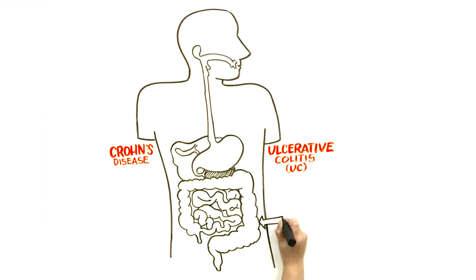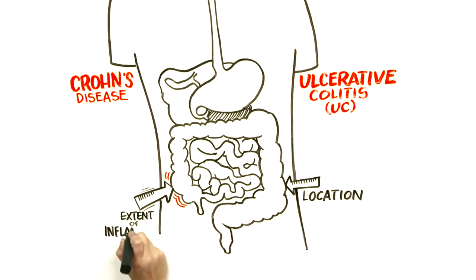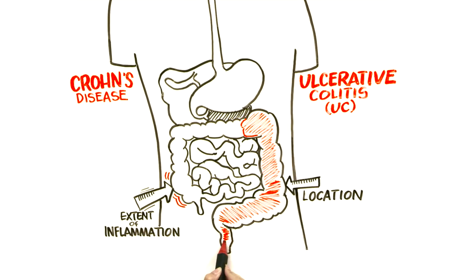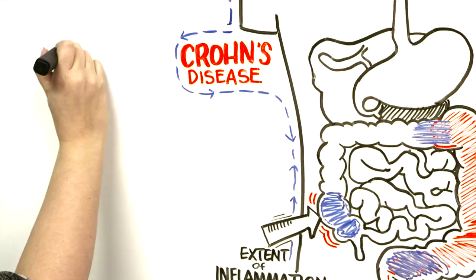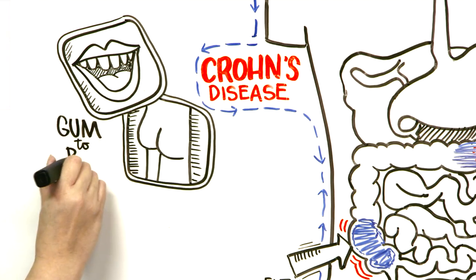The key differences are firstly the location of the inflammation and secondly the extent of the inflammation. Ulcerative colitis only affects the colon or large intestine while Crohn's disease can affect the entire digestive system from the mouth to the anus or as we say from gum to bum.